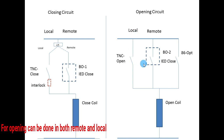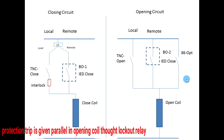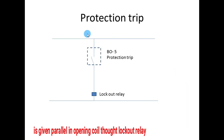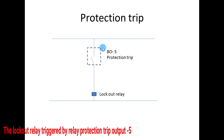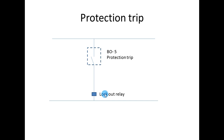For opening, it can be done in both local and remote, and also through protection trip. The protection trip is given parallel to the opening coil. The protection trip will operate through the lockout relay.